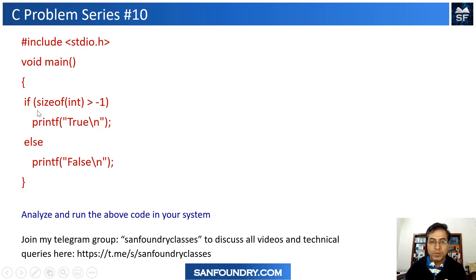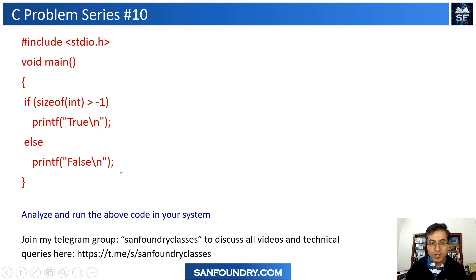Consider this piece of code where you have an if condition with some sizeof a data type and some computations and a relationship check — a greater-than symbol. When you have this if condition you can have one of these outcomes. Many of you who have seen some of my earlier videos will know that the answer is not going to be true, it's going to be false.